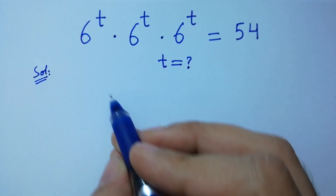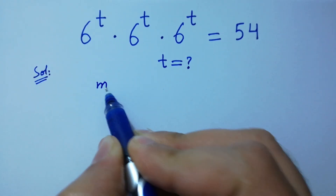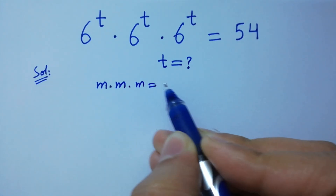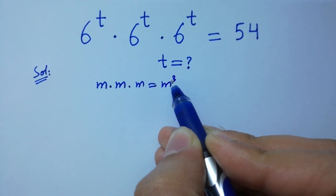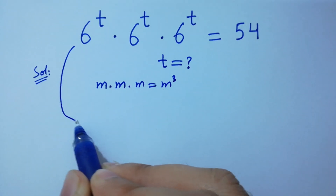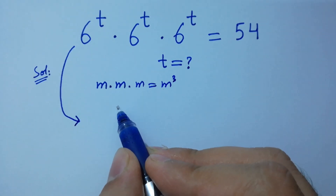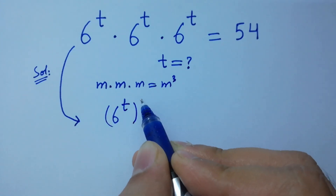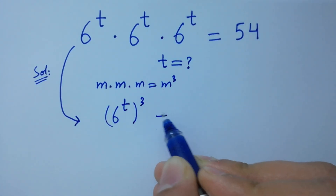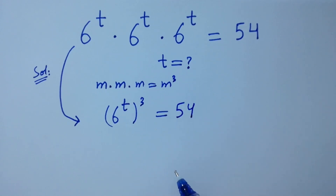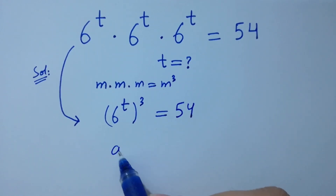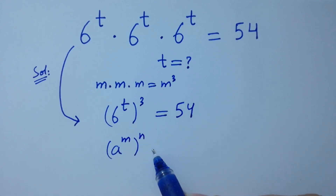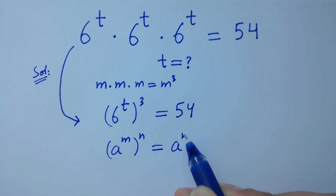As we know m times m times m equals m cubed, it will be 6 to the power t to the whole power 3, equal to 54. Using the rule: a to the power m to the whole power n equals a to the power m times n.